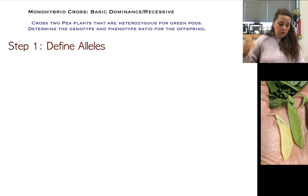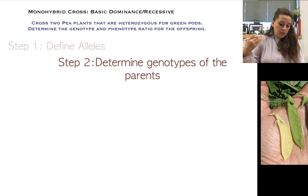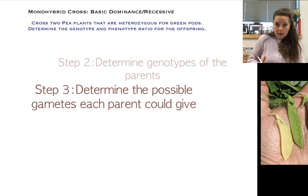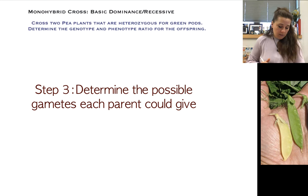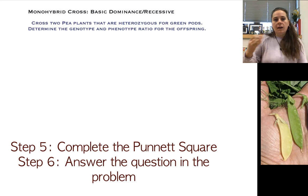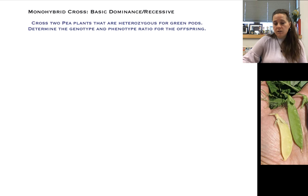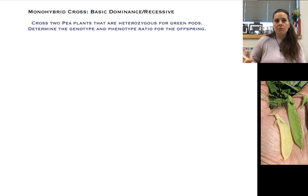Just as a recap: you begin by defining the alleles, then determine the parent genotypes, then determine what gametes each parent could give during meiosis, set up your Punnett square, do the cross, and answer the question. Those are the steps every time. If you have any questions, shoot us an email. We'll be applying these steps not just to plants but to human traits and all different kinds of problems, so we'll be doing lots of practice. Take it easy and we'll see you soon!